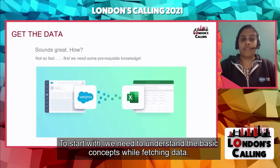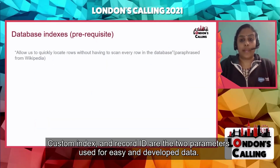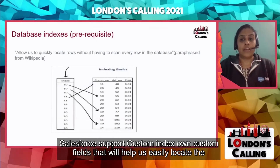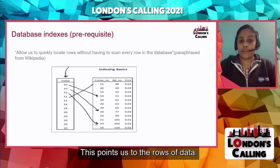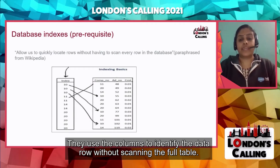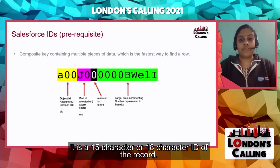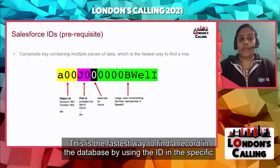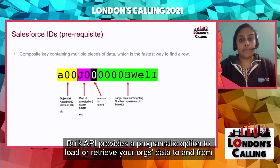To start with, we need to understand the basic concepts while fetching data. Custom index and the record ID are the two parameters used for easy and quick retrieval of data. Salesforce supports custom index on custom fields, which helps locate rows without scanning every row in the database. The index contains sorted columns and pointers to the rows of data. Queries use the index columns to quickly identify data rows without scanning the full table. The next parameter is the Salesforce ID — the 15 or 18 character ID of the record — which is the fastest way to find a record by using it in the WHERE clause of a query.